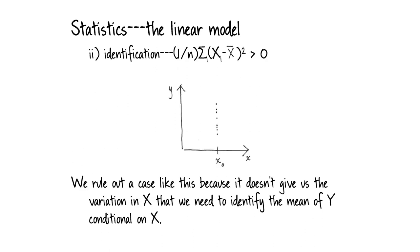Let's look at assumption two, called identification. We're ruling out the case where all of our observations on X lie on a particular value X_0. We rule this out because it gives us no variation in X that we need to identify the mean of Y as a function of X. If we're trying to fit a regression line but have all observations at one point, we can't do it.